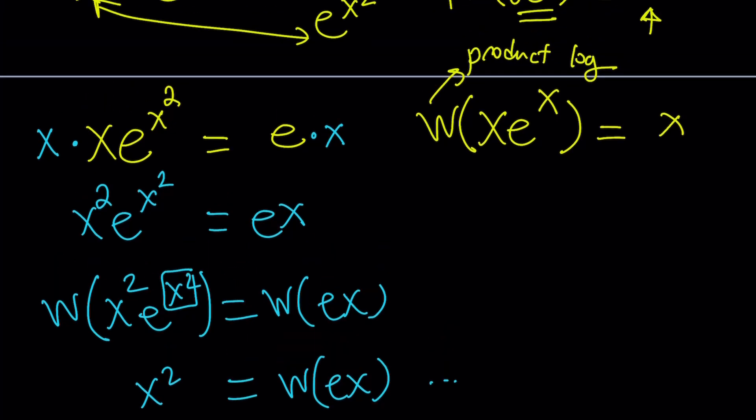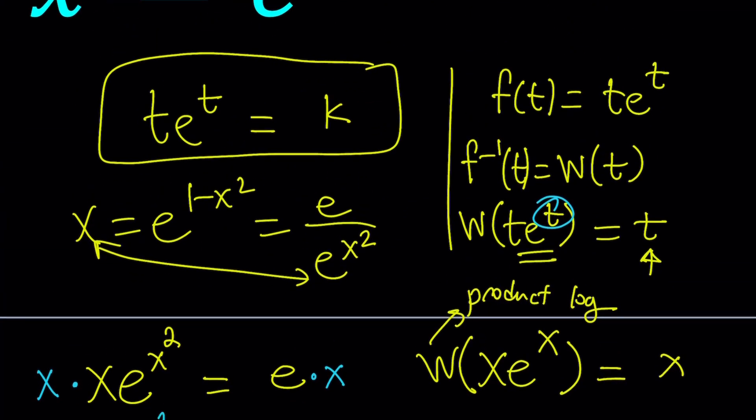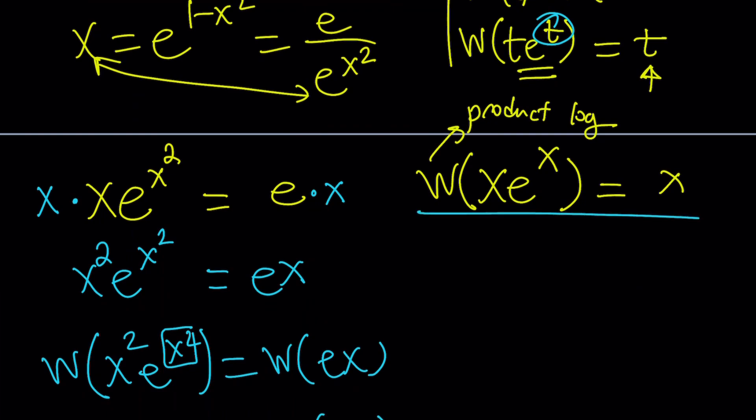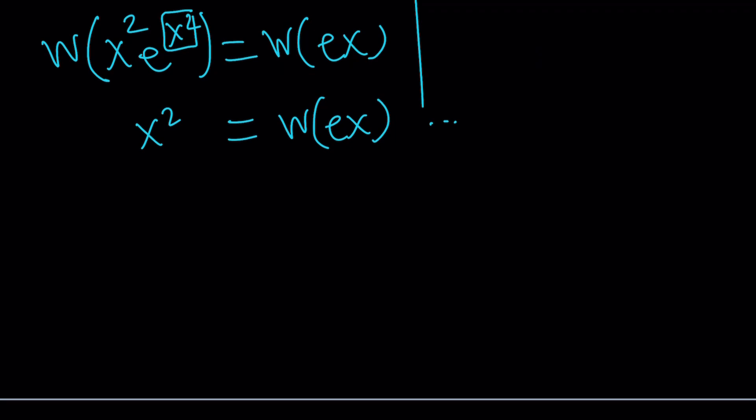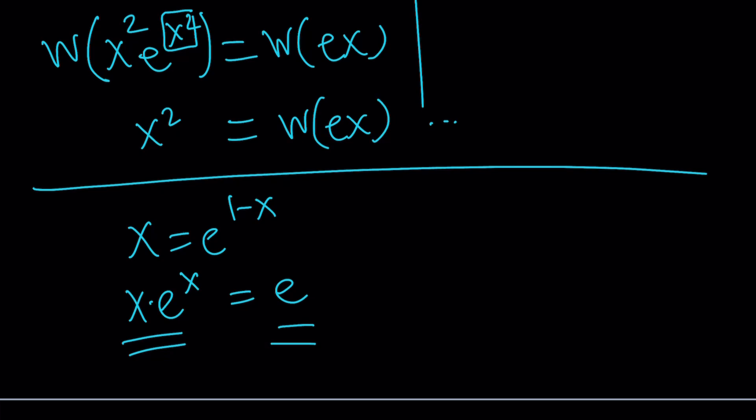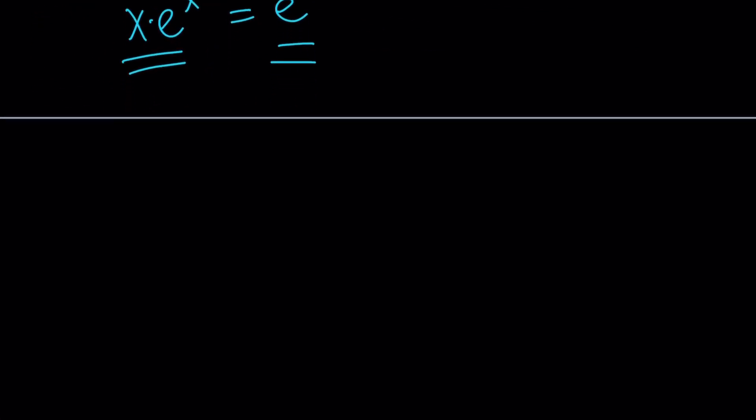Unfortunately we don't have a straightforward answer here. At the same time, if we had x equals e to the power 1 minus x then you could easily do this. You could write this as xe^x equals e and then use Lambert's W function on both sides and you would get an answer. Let's get back to the original problem.